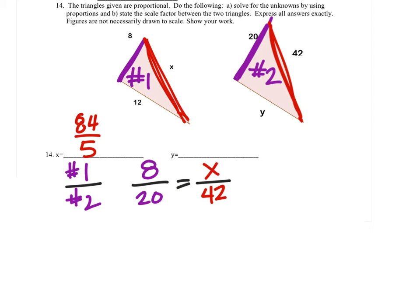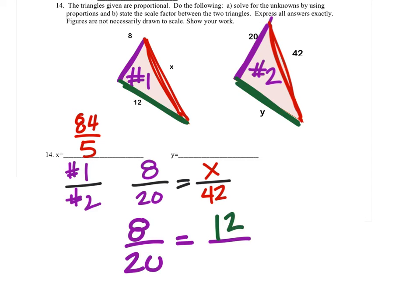In this last one, I'm going to compare the 12 to the y. So when I set up my proportion, I still have 8 over 20, but this now equals the 12 from triangle 1 in the numerator, and the y is in the denominator.